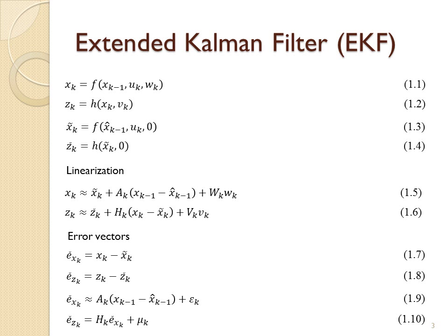Where epsilon and eta represent new independent random variables having zero mean and covariance matrices. Notice that equations 1.9 and 1.10 are linear, and that they closely resemble the difference and measurement equations from the discrete Kalman filter.